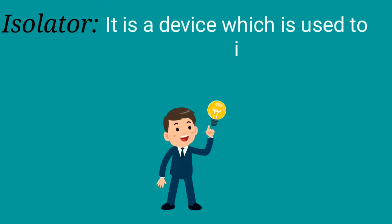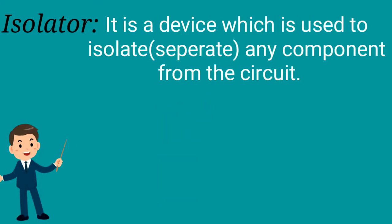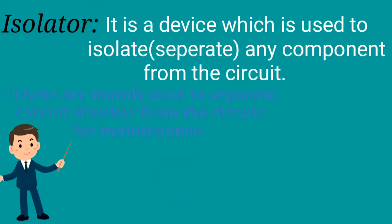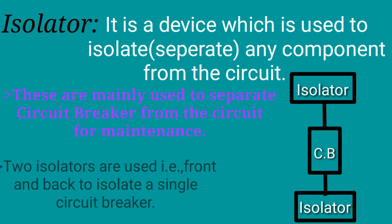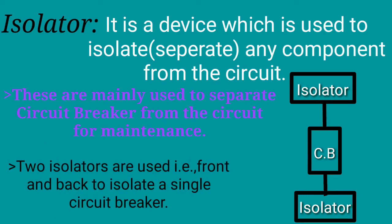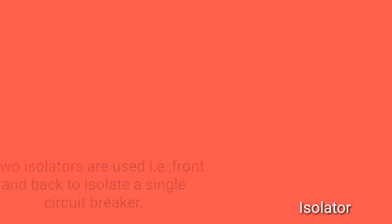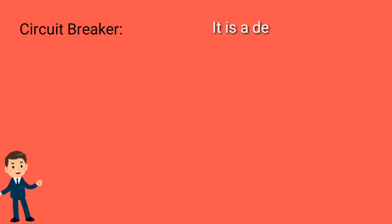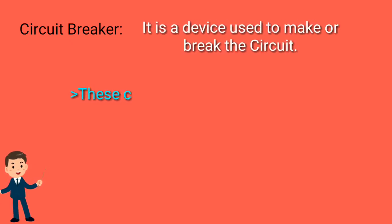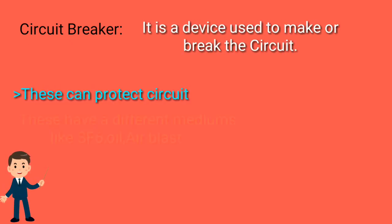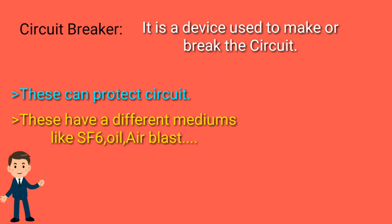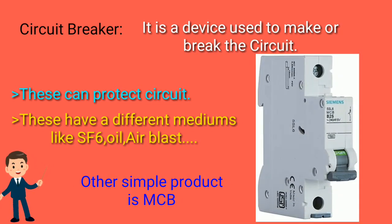An isolator is a device which is used to separate any component from the circuit. A circuit breaker is a device which is used to make or break the circuit. If the circuit is on or off, you can switch the circuit.